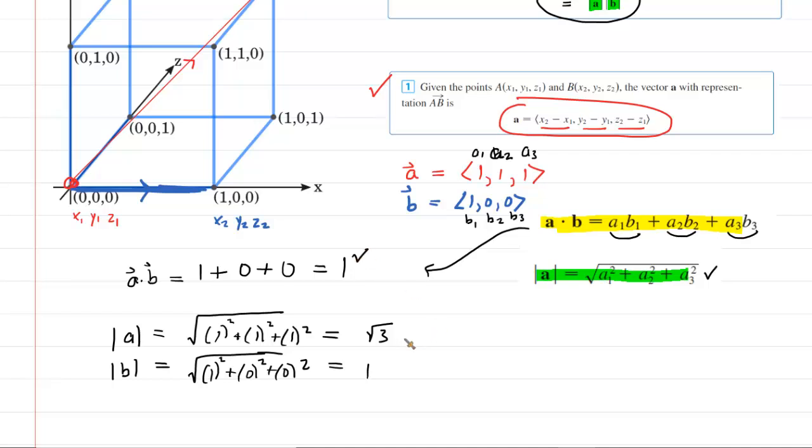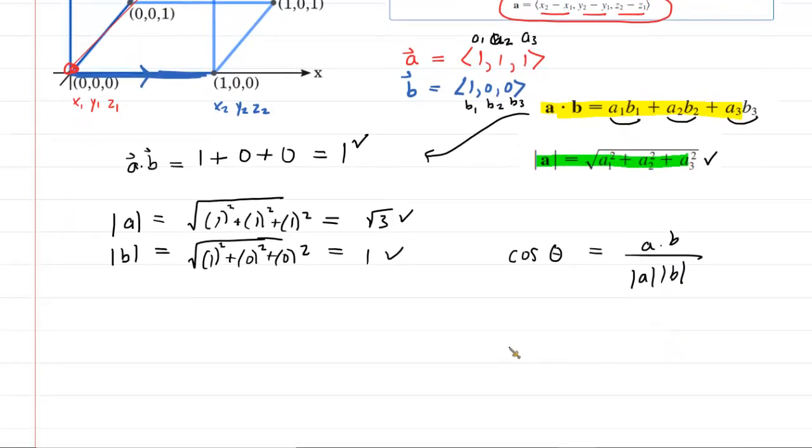We are now ready to compute the angle between these two vectors by using that corollary. We've done the hard work already. We can say that the cosine of theta is equal to the dot product, which was 1, over the square root of the product of the magnitude of a and the magnitude of b.